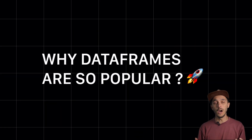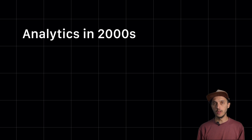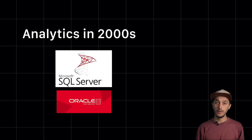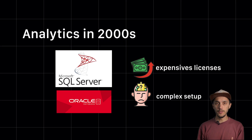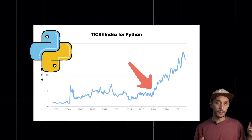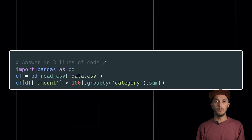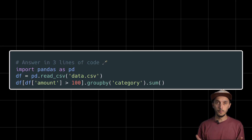A quick history lesson on why DataFrames became so popular and what they are missing today. Back in the 2000s, if you wanted to do analytics, you would install Oracle or SQL Server — expensive license, complex setups, DBAs to manage connections. It was a nightmare for quick analysis. Then Python exploded in popularity. Pandas came along and changed everything. Suddenly, you could pip-install Pandas, write a few lines of code, and get immediate results. No DBAs, no license, no infrastructure headache. Just pure analysis in a Python process.